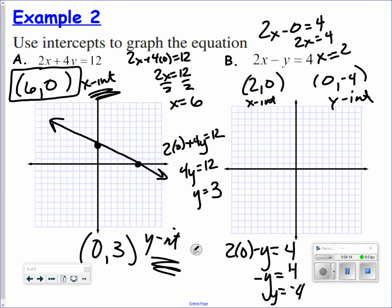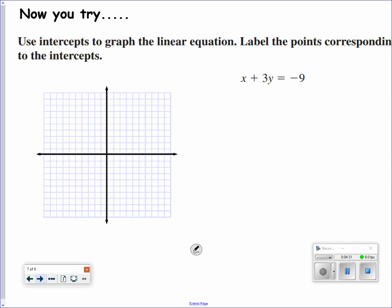So (0, negative 4), (2, 0). Graph the intercepts. And again, the only reason why this works is I have both an x and a y in the equation. So I can have an x-intercept and a y-intercept.